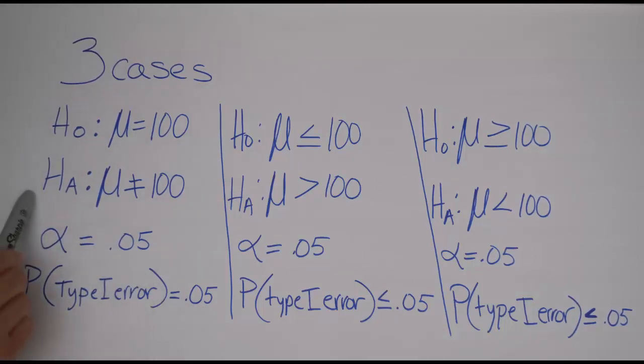So in every hypothesis testing problem there's a significance level. It's often 5% but it could be something else. But if it's 5% like it is in this example, then the probability of a type 1 error is exactly 5%.